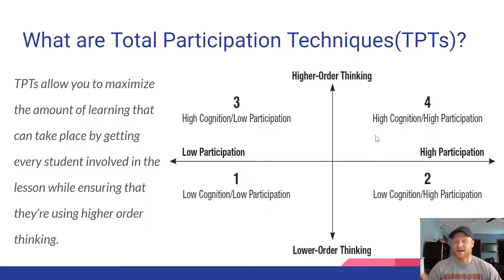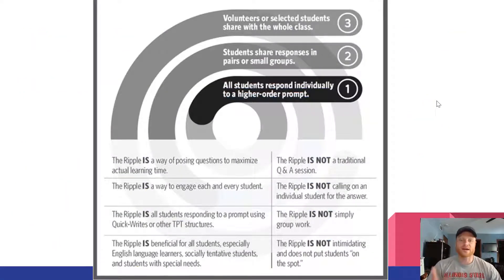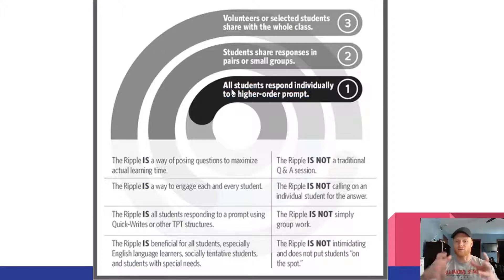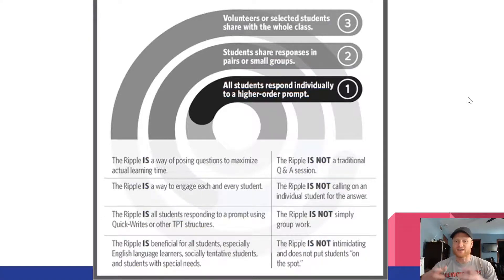That's what TPTs are designed to do — to put your students in that fourth quadrant so they are having to think really hard and everyone is participating. The authors encourage you to think of yourself as throwing a stone into a pond. When you throw the stone, you lob a higher-order question to your students. The first ripple is that all students respond individually to that prompt. You give them think time — between 30 seconds and maybe two minutes — to process and come up with their own answer.